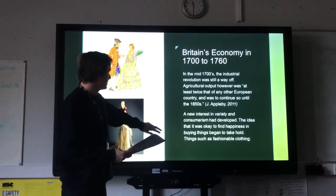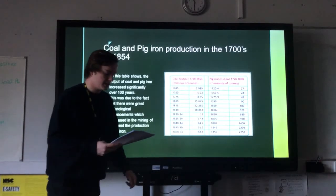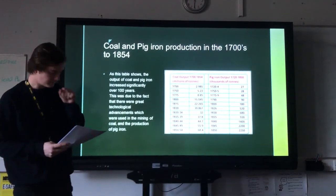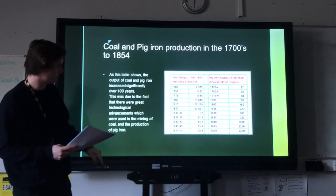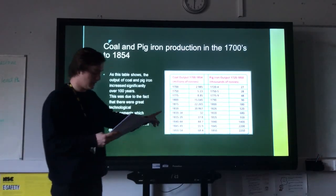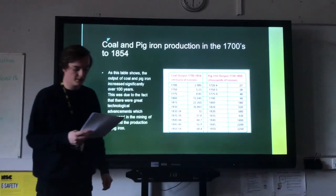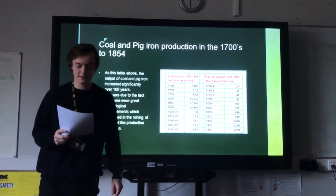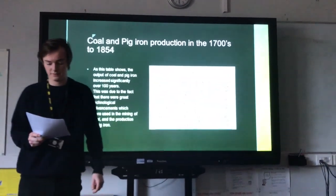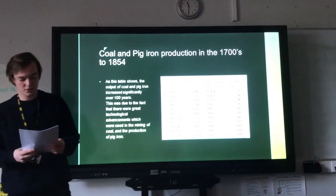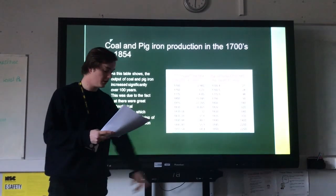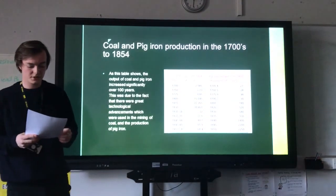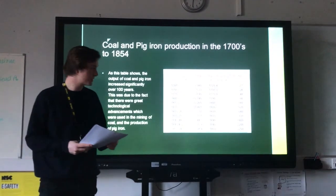Moving on to coal and pig iron production from the 1700s to 1854. As we can see from the table, the output of coal increased from 2.9 million tonnes in the 1700s to just over 68 million tonnes by the 1850s. The same pattern of growth can also be found when analysing the output of pig iron on the right-hand side of the table. The reason behind this rapid influx was due to the invention of important technologies.